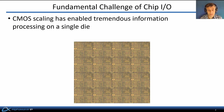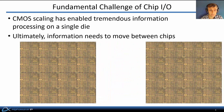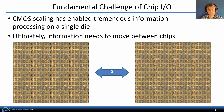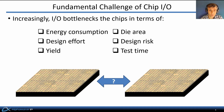CMOS scaling has enabled tremendous information processing on a single die, but ultimately information needs to move between chips through the array of pads provided for input and output. The task of transporting information between chips is, in many and an increasing number of cases, outstripping the task of processing the information in terms of energy consumption, design effort, yield, die area, design risk, and test time.